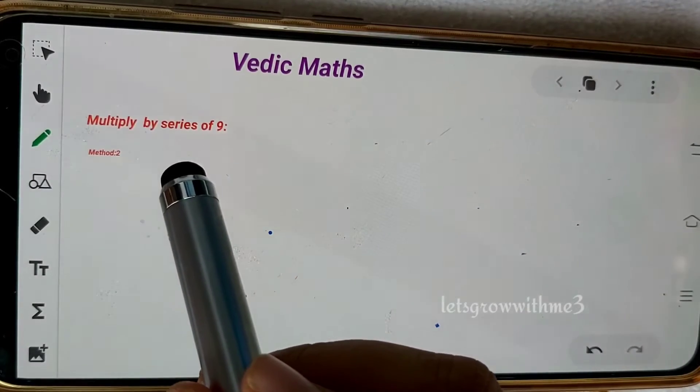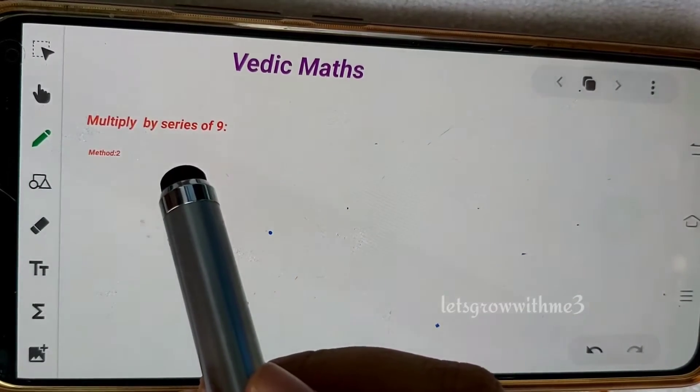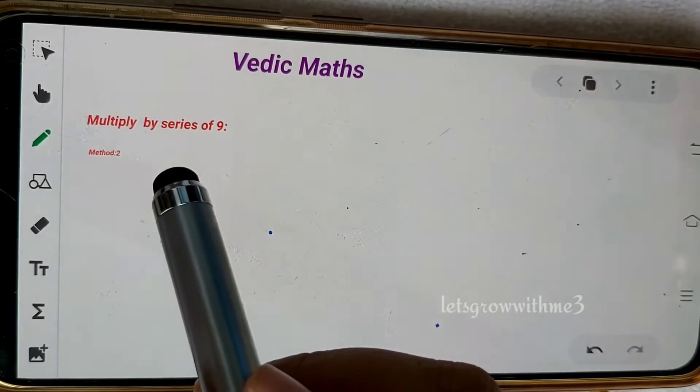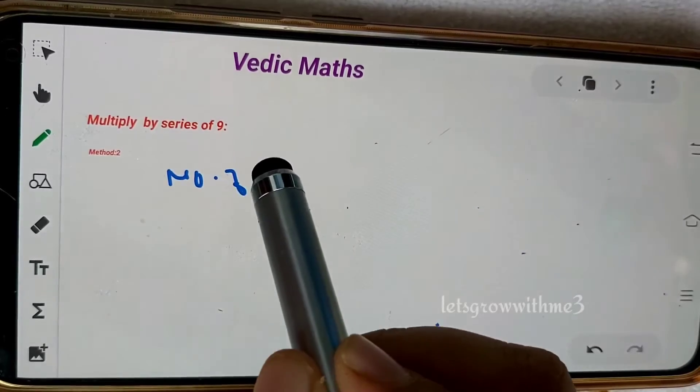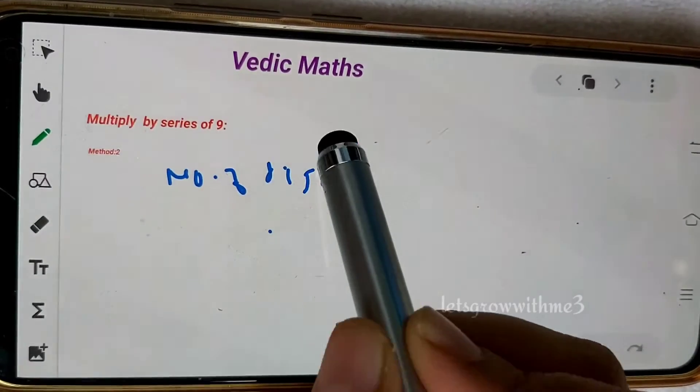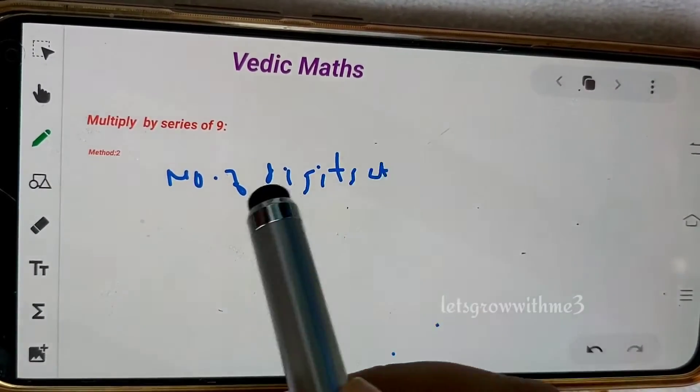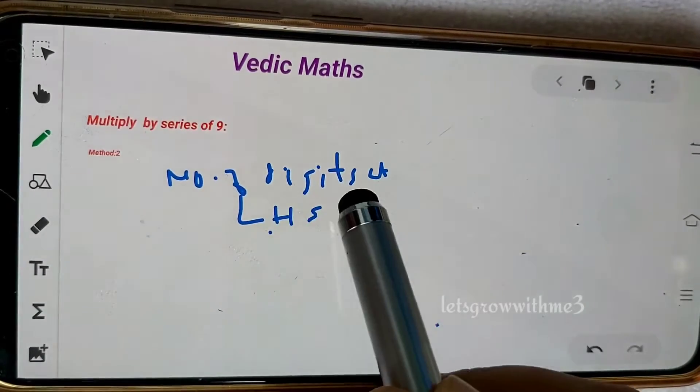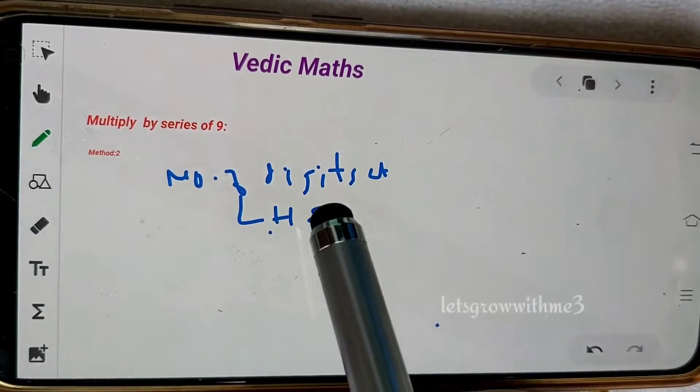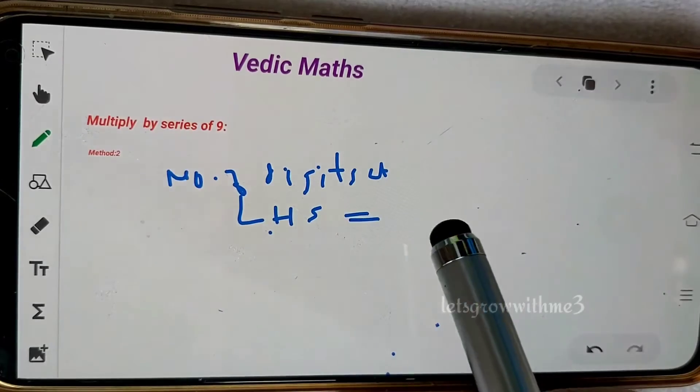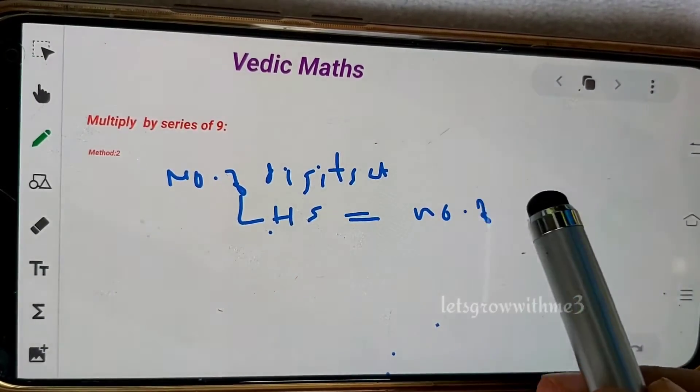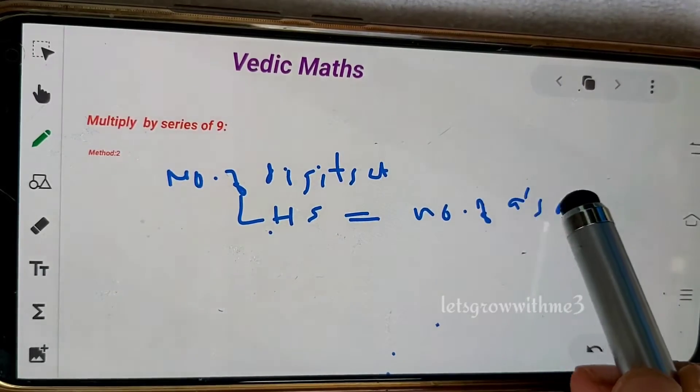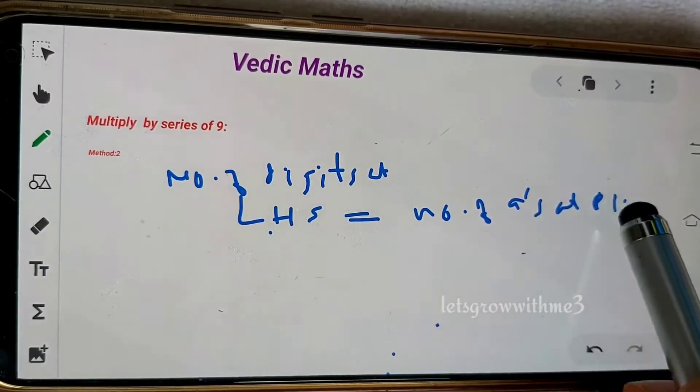One more time I am repeating: the number of digits at left hand side should be equal to the number of 9s at right hand side. If our examples satisfy this condition, then we can apply this method. This method is even easier than our earlier method.